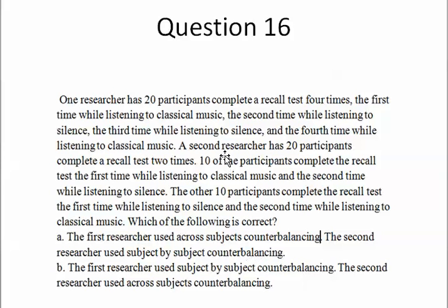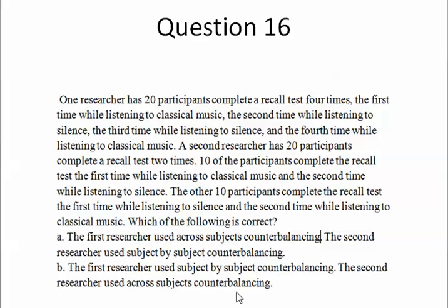The second researcher has 20 participants split into two groups of 10: 10 get classical then silence (A-B order), and the other 10 get silence then classical (B-A order). When participants are randomly assigned to different orders, this is called cross-subjects counterbalancing. So the correct answer is B.